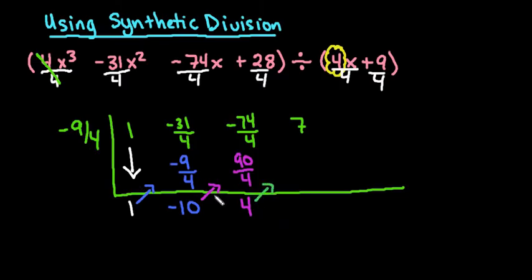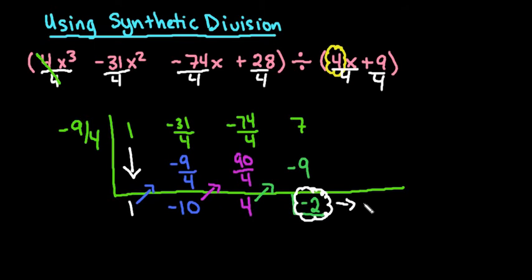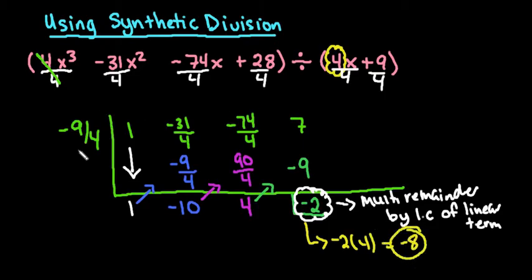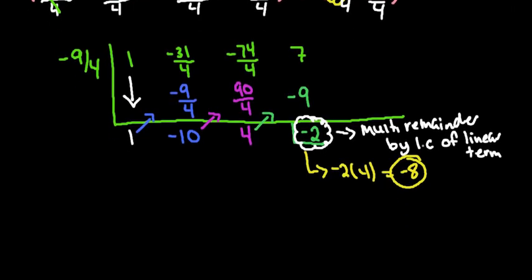For the last column, I'm multiplying negative 9 fourths times 4 — since 4 divided by 4 is 1, I'm just left with negative 9. Now, this last result is the remainder, but remember we divided through by 4, so we have to multiply the remainder by the leading coefficient of the linear term — whatever we divided by originally. So I do negative 2 times 4, giving a remainder of negative 8.